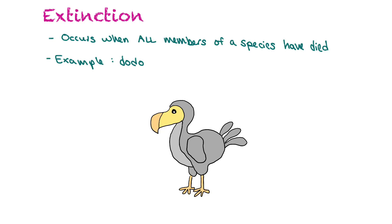Extinction is when you can't go back — it occurs when all members of a species have died. An example would be the dodo, a bird that lived on islands in the South Pacific with no natural predators. When European settlers arrived, they took the dodo as an excellent food source and the dodo didn't know how to defend itself, so it was over-exploited into extinction.